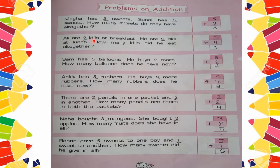Next: Ali ate 2 idlis at breakfast and 4 idlis at lunch. How many idlis did he eat altogether? First write 2 for breakfast, then write 4 for lunch, and add them. 2 plus 4: counting 3, 4, 5, 6. So 2 plus 4 is equal to 6.